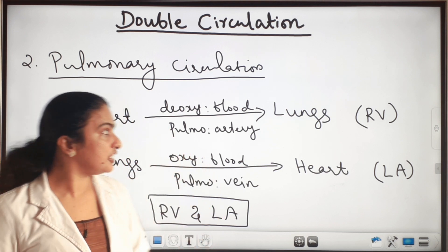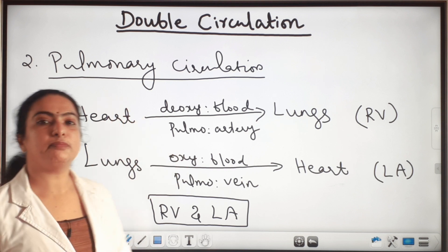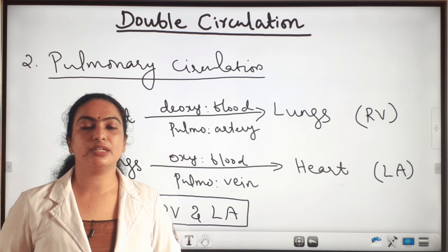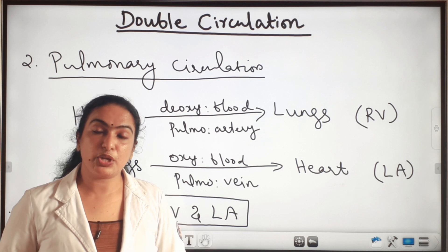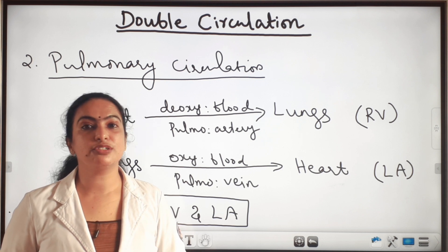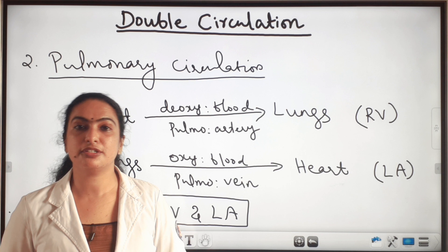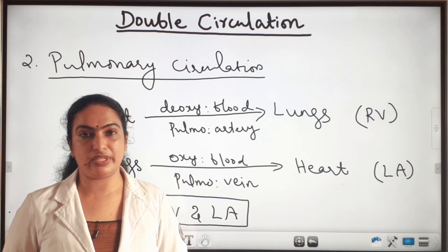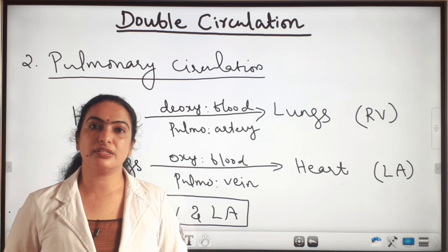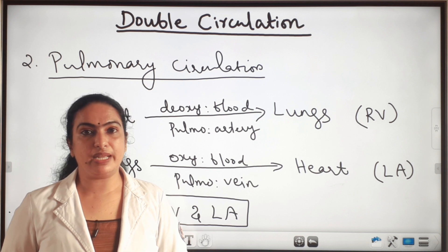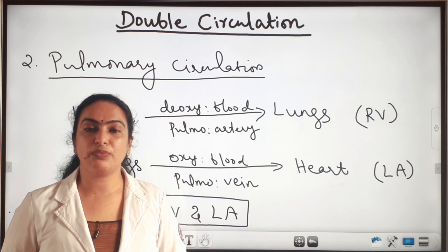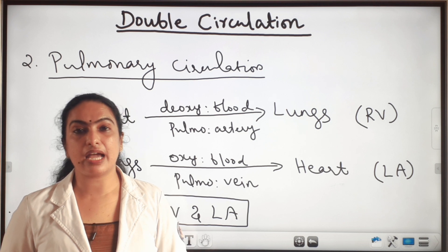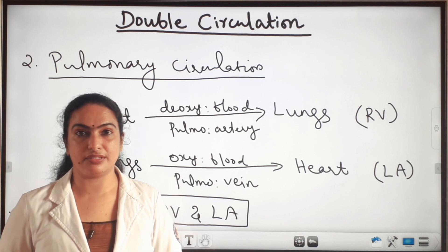Now we can see the definitions. Systemic circulation means the pathway of blood from the body to the heart and from the heart back to the body. Pulmonary circulation means the pathway of blood from the heart to the lungs and from the lungs back to the heart.